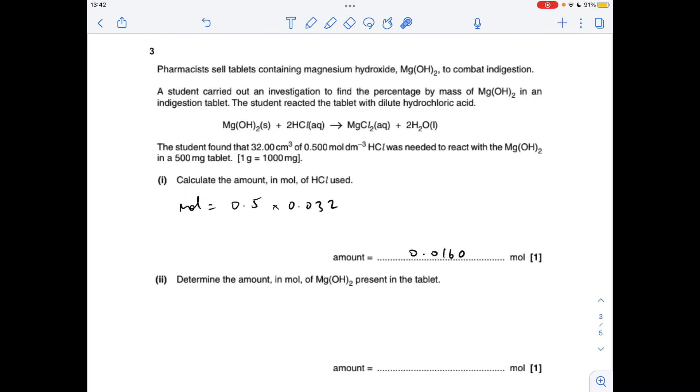Question three: the moles of hydrochloric acid used, concentration times volume—remember the volume's got to be in decimeters cubed—0.0160. So we use the mole ratio in the equation to get the moles of magnesium hydroxide that are in the tablet, so it's going to be half as many.